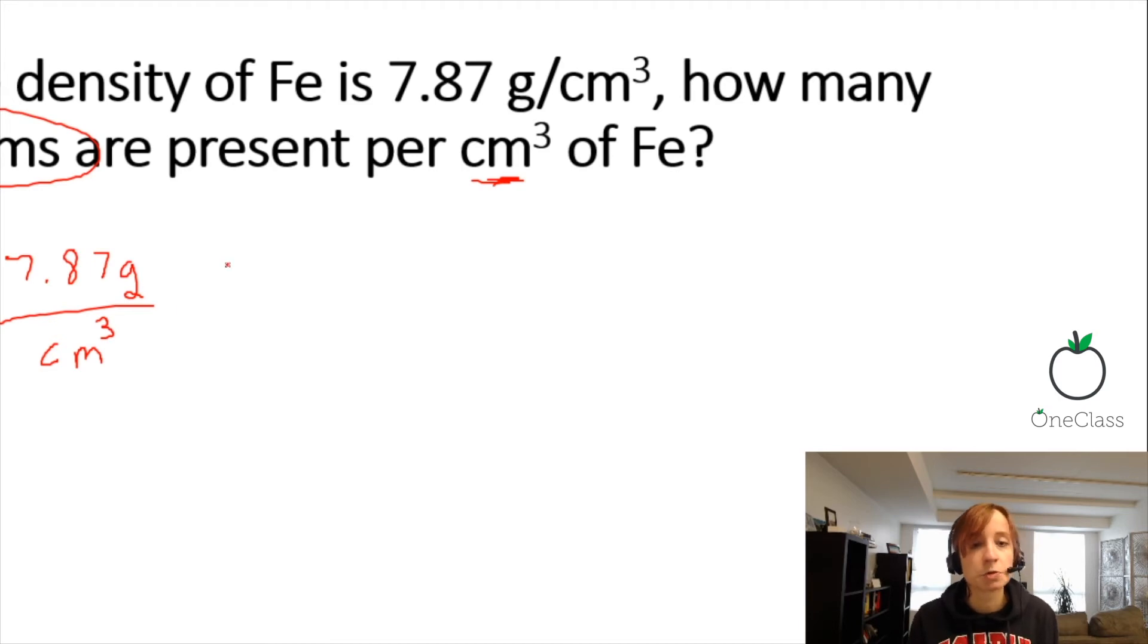To convert into moles, we will need the molar mass of iron, which if we look at the periodic table is 55.845 grams per mole. Now, I'm going to write it out so that our grams will cancel out: one mole over 55.845 grams. Here, grams cancel out. What I'm left with is mole per centimeter cubed.